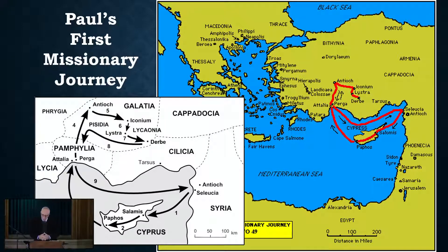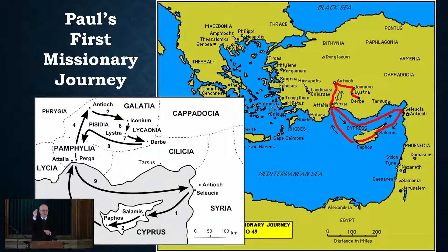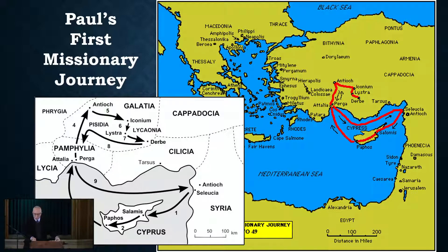Paul and Barnabas started out with John Mark. Try to follow it up there on the map. They start out in Syrian Antioch — remember there's two different Antiochs. This is Syrian Antioch, not too far from Tarsus, where Saul was before he was called into his full-time ministry. You see that a little to the west of Syrian Antioch. And then they went to the town of Seleucia.